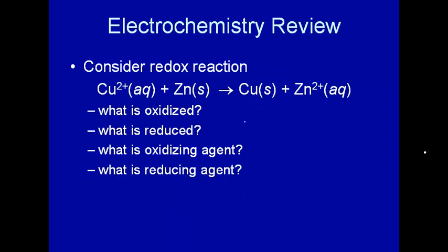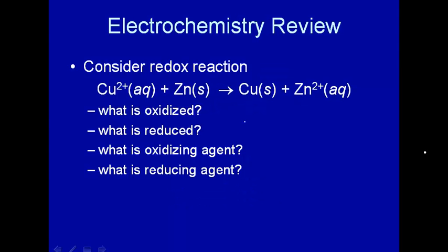Let's first review some topics in introductory chemistry about electrochemistry. Let's consider a redox reaction. Redox stands for oxidation reduction. Here's an example. If you take some copper in solution as Cu²⁺ and into that solution you put solid zinc, what happens is that copper plates out on the zinc and zinc then goes into solution as Zn²⁺. This is an oxidation reduction reaction.